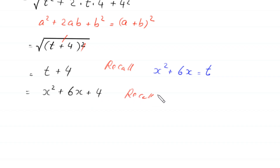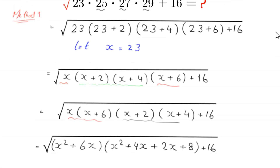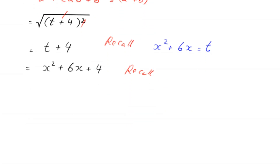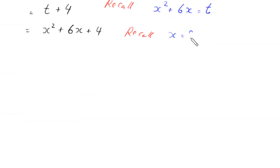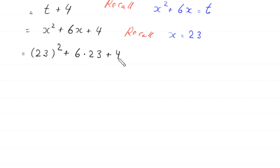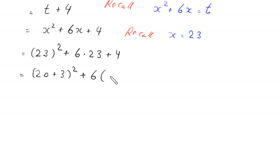We recall that x is equal to 23, so we replace every x with 23. This becomes 23²+6(23)+4. Now 23² can be written as (20+3)², and 6 times 23 is 6 times 23.